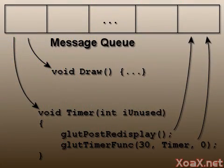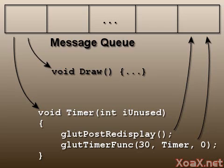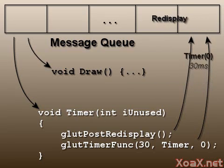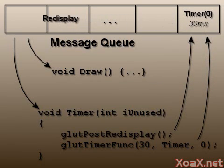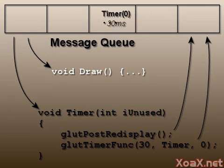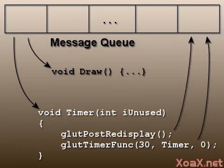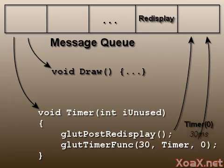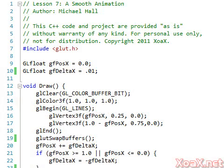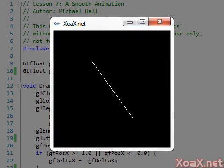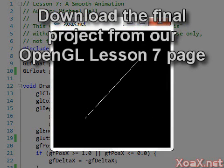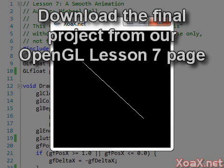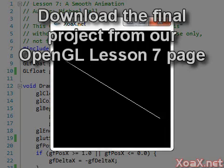Our animation loop now looks like this: the timer function is called the first time in the main function. The timer function posts a redisplay message and then posts a timed callback message for itself. The redisplay message causes draw to be called, which draws on the back buffer and then sets that buffer to be displayed in the window. At the end of 30 milliseconds, the timer function is called again and dispatches the redisplay and timer messages. Now we can compile and execute our program and we should see a nice smooth animation. If the animation is jerky, you may need to reduce the speed by increasing the callback time for the timer. Also keep in mind that simultaneously running other applications will often slow down your computer.